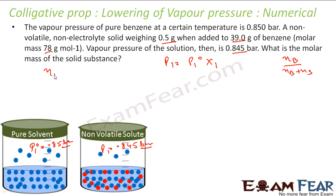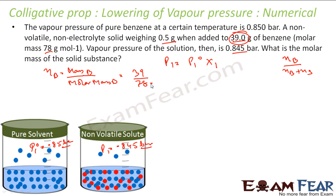What are the moles of benzene? Moles of benzene is mass of benzene divided by molar mass of benzene. Mass of benzene is 39 gram, molar mass is 78 gram per mole. Grams cancel, giving 0.5 moles of benzene.